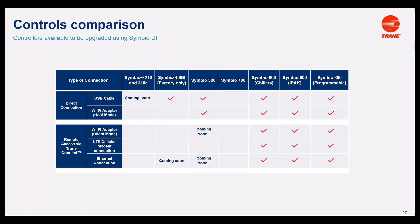For the 400B, you can now use the USB cable direct connection, and you will be able to do it using Ethernet connection in the next releases. For the 500, you are able to use the Symbio UI to upgrade the firmware using the USB cable, the Wi-Fi adapter in host mode. Through Trane Connect, you will be able to upgrade this controller using the Wi-Fi adapter in client mode. Ethernet connection for the 500 will also be available in the next releases.